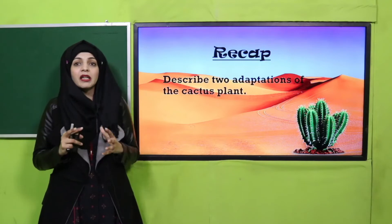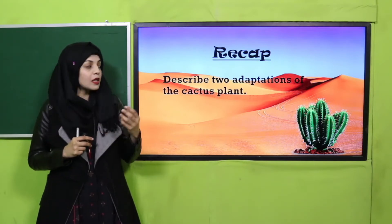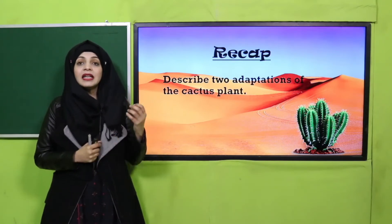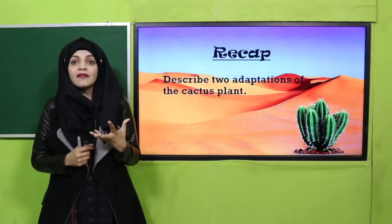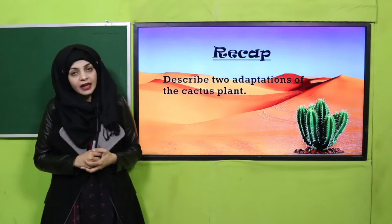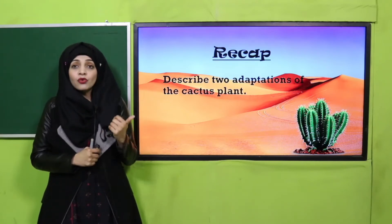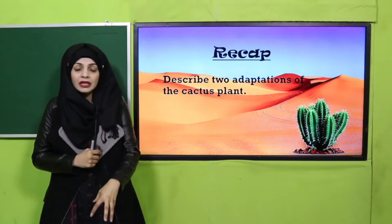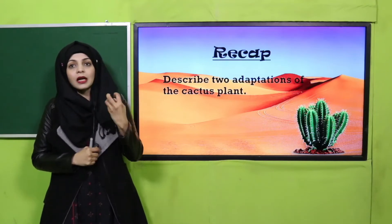The cactus stores water in its green stem, and instead of leaves it has thorns, so water cannot evaporate from inside. Another adaptation: its roots grow deep down so they can reach and suck up water from wherever it is available.